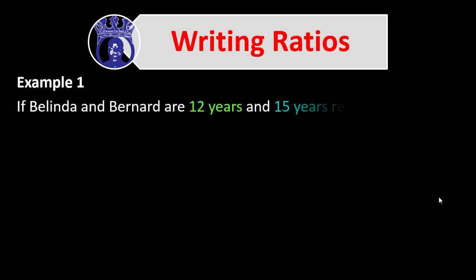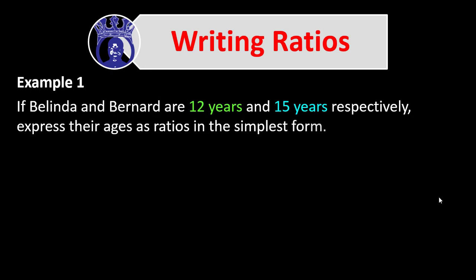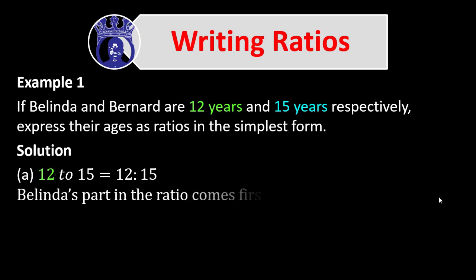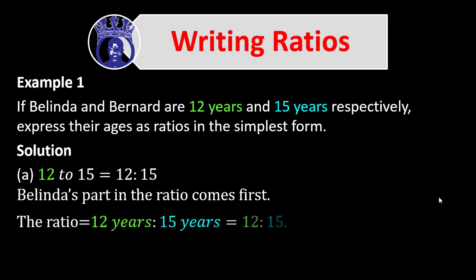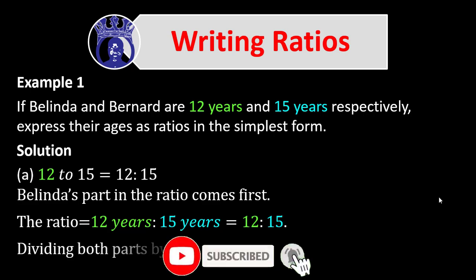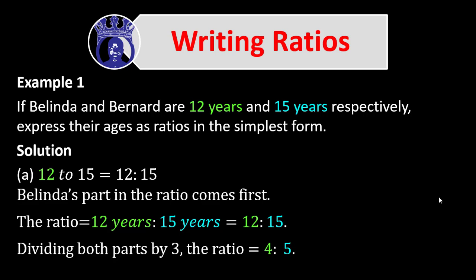Example 1: If Belinda and Bernard are 12 years and 15 years respectively, express their ages as a ratio in the simplest form. Solution: The ratio is 12 to 15. Since Belinda's name came first, her age comes first in the ratio. The units — years — cancel out, leaving 12 to 15. Dividing both parts by 3, which is the HCF of 12 and 15, the ratio reduces to 4 to 5.